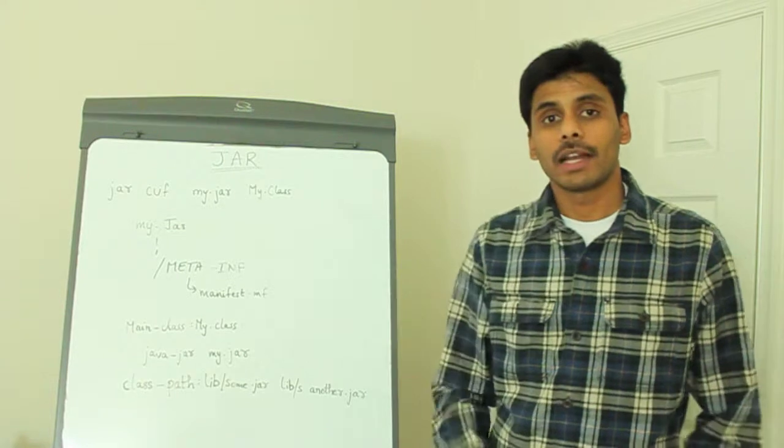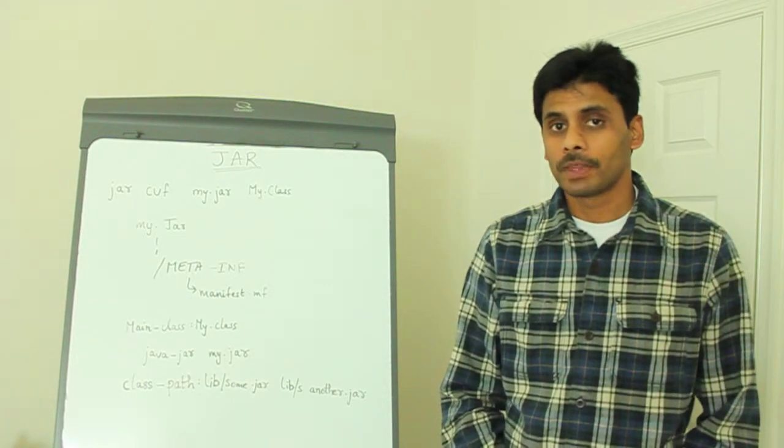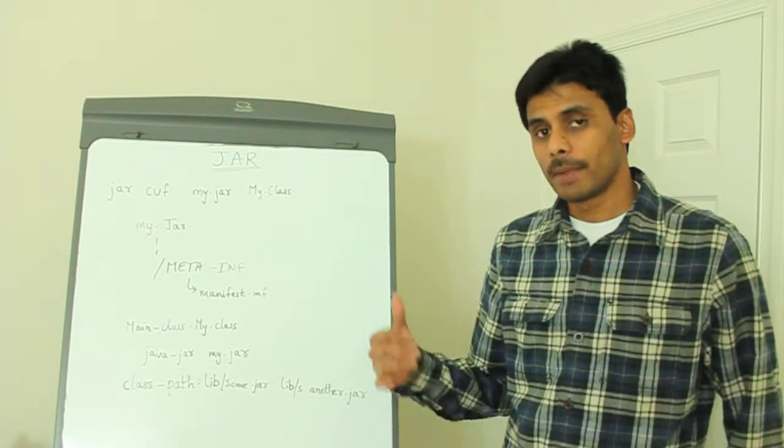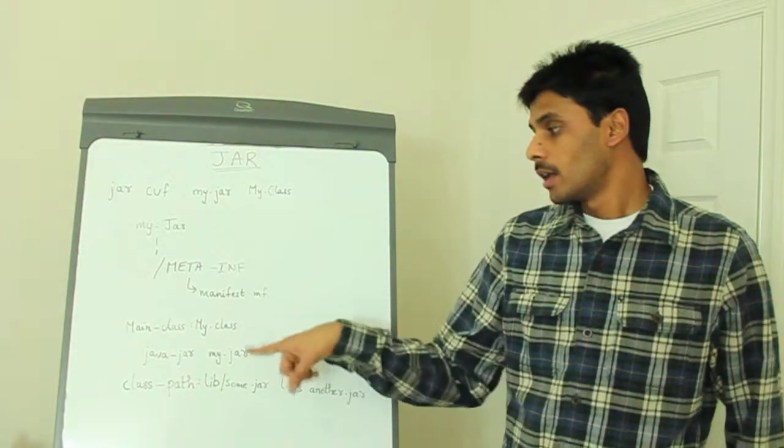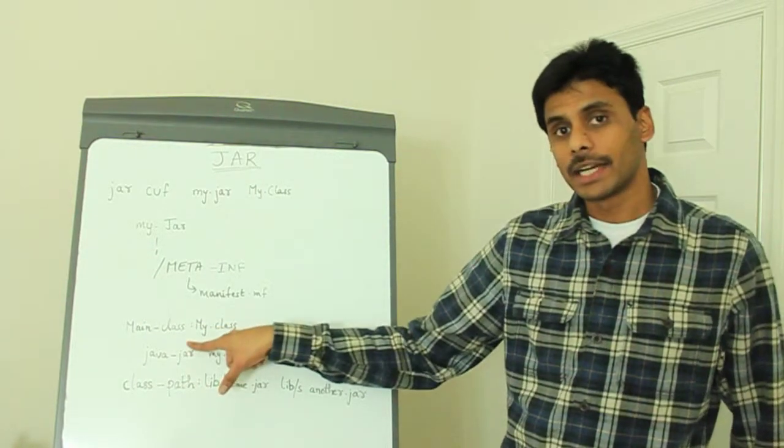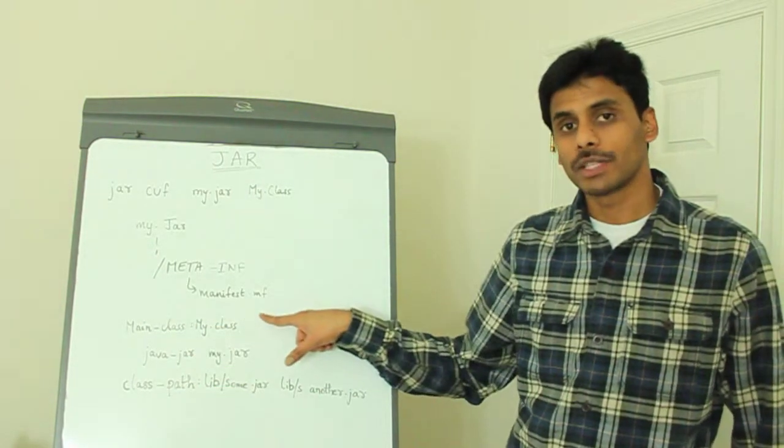We can make a JAR file an executable JAR file by creating a class with the main method, adding this class to a particular JAR file, and then listing that class with the main method using the main-class attribute within the manifest.mf.